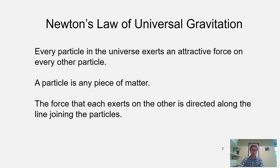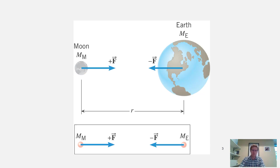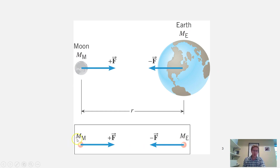One easy example is the earth and the moon. The moon is held in orbit around the earth by the gravitational attractive force between them. You can think of the earth and moon as two point masses some distance apart from one another, and they experience this natural attractive force — just like me and my wife, or me and my water bottle. Any two things anywhere in space.